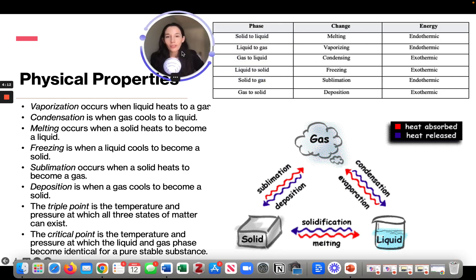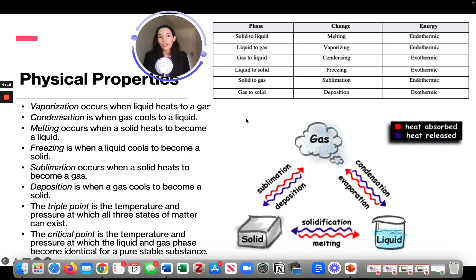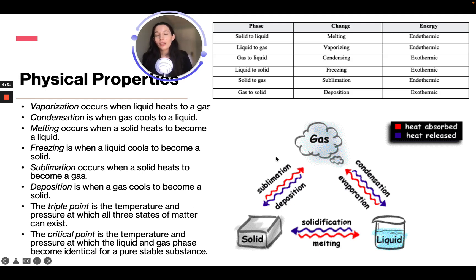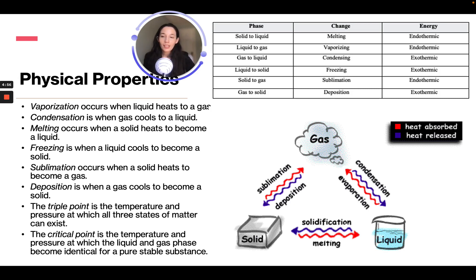It is important to know all of these terms about physical properties: vaporization occurs when a liquid heats to a gas; condensation is when a gas cools to a liquid; melting occurs when a solid becomes a liquid; freezing is when a liquid cools to become a solid; sublimation occurs when a solid heats to become a gas; deposition is when a gas cools to become a solid. The triple point is the temperature and pressure at which all three states of matter can exist, and the critical point is the temperature and pressure at which the liquid and gas phases become identical.